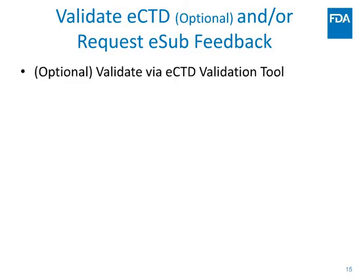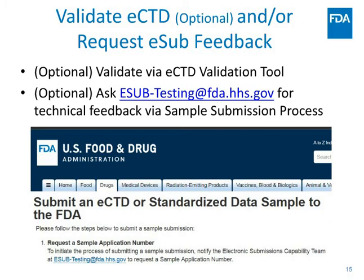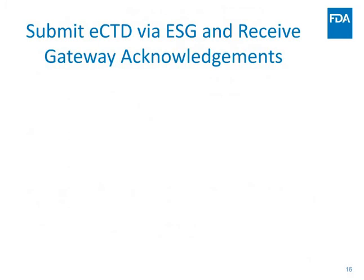Now you have your ECTD submission created. You can either send it directly to FDA for review, or as an optional step, validate it on your own side first by downloading validation software. You could also ask our ESUB team to take a look at your submission as a sample submission - we'll validate it through our validation tool and review how it looks in FDA's ECTD viewer, and if we see anything incorrect we'll let you know. You can contact us at E-sub-testing if you're interested in sending in a sample submission.